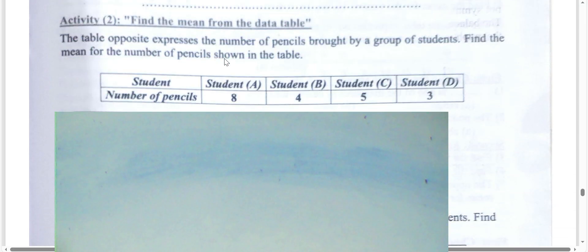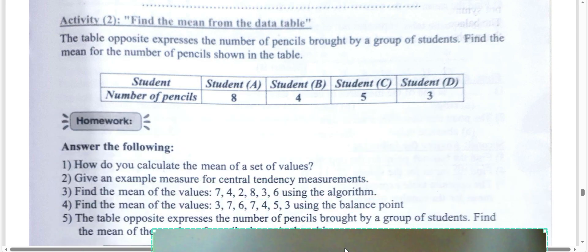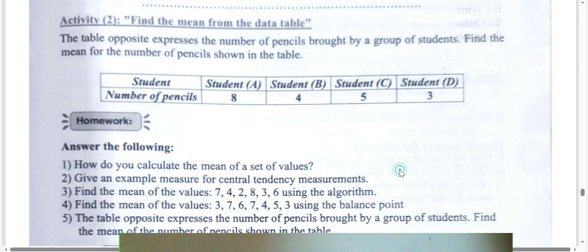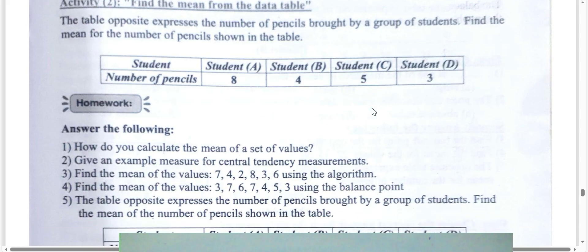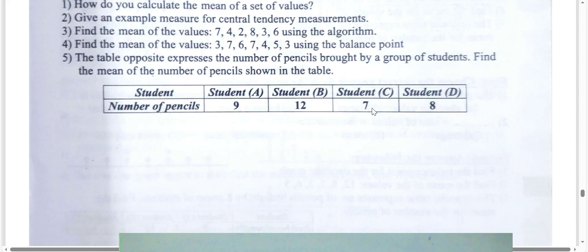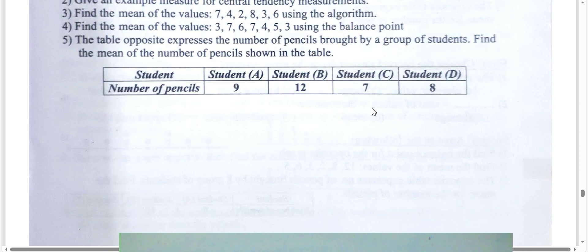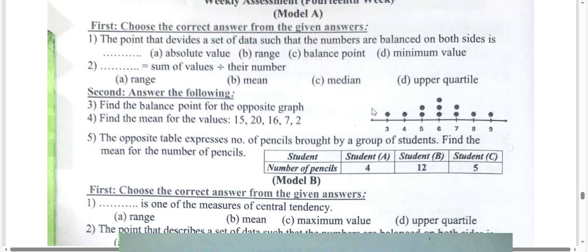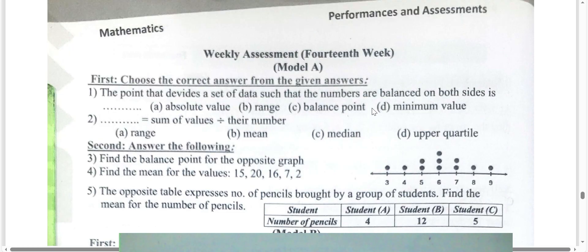You can also find the mean using a table. Add all numbers and divide by the number of students. For pencils: eight plus four is twelve, plus three is fifteen, plus five is twenty. Twenty divided by four equals five. You can also use a table to find the mean.